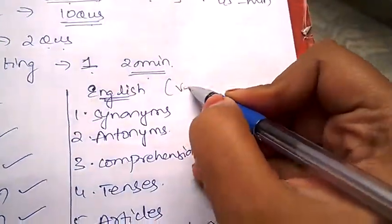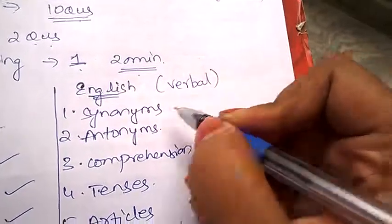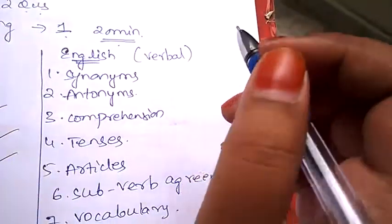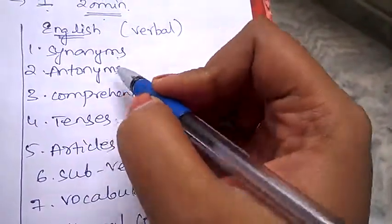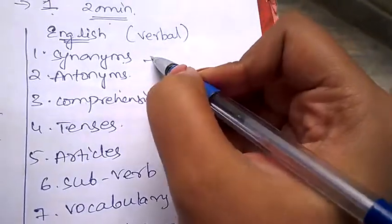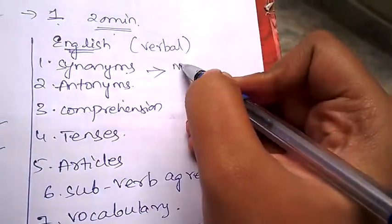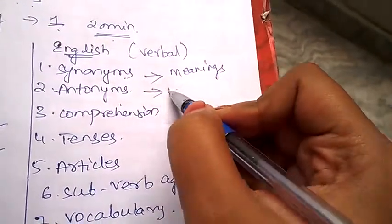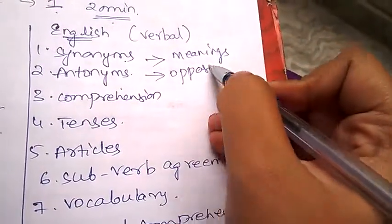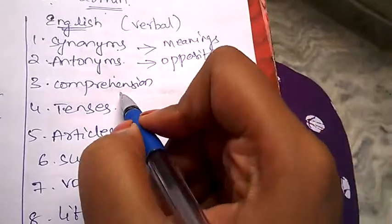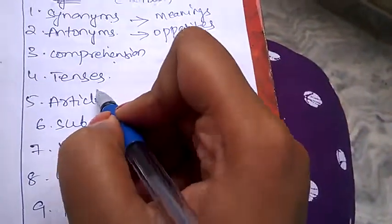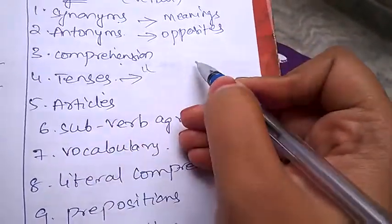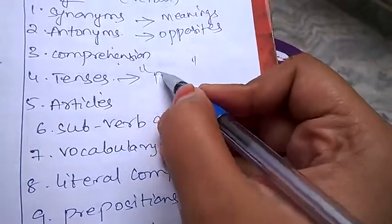Under verbal or English, the syllabus is: synonyms and antonyms. Synonyms is nothing but meanings of the words, and antonyms are opposites. Comprehension, tenses - you need to recognize in which tense the word is, like past tense or present tense or future tense.